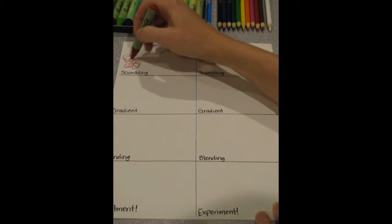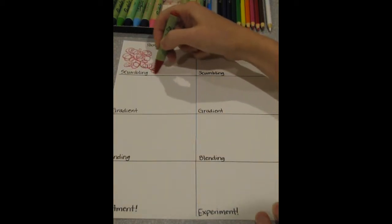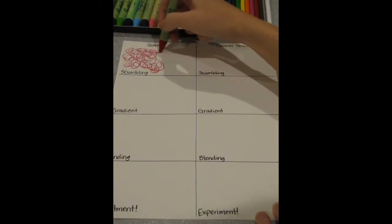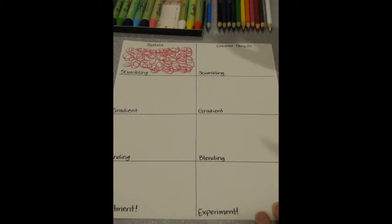Now we are going to start with scumbling. Scumbling is a technique to color in the section with more circular motions. Here you are not going to be filling in all of the space, but as we work in that section we can see the movement, almost like a texture within the color. So you are going to pick one color and you don't want to fill in all of that space.